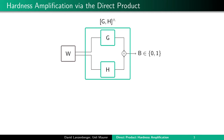A natural thing one might want to do with such games is to compose multiple of them in parallel and obtain a new game — say the AND of two games G and H — where a winner W can interact with both G and H in parallel. This new game is won if and only if both G and H have been won.